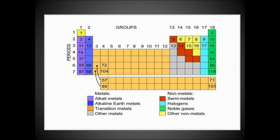This periodic table diagram represents different elements in different colors, showing 7 periods (1 to 7) and two types of groups: main group elements and representative elements. Groups 1A and 2A are the S-block elements, Groups 3A to 8A are the P-block elements, between them are the D-block outer transition elements, and at the bottom are the inner transition elements.